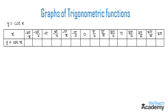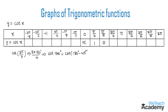Now let us find the values of y by substituting the values of x into y = cot(x). Substituting 0, we get cot(0), which is infinity. Then cot(π/4) = 1. For π/2, cot(π/2) = 0. For 3π/4: cot(3π/4) = cot(135°) = cot(180° − 45°), which is in the form cot(180° − θ) = −cot(θ), giving −cot(45°) = −1.